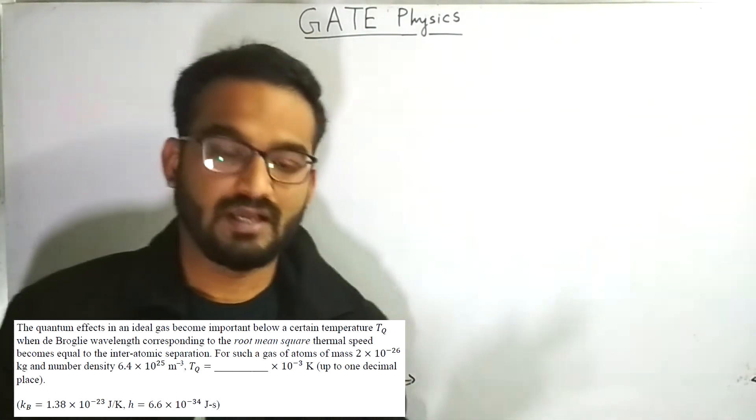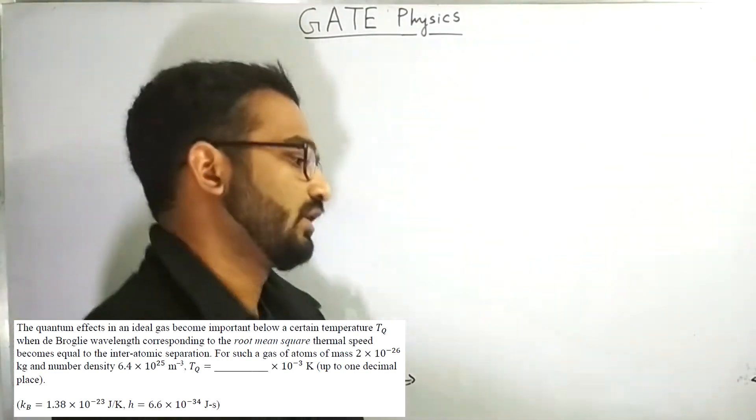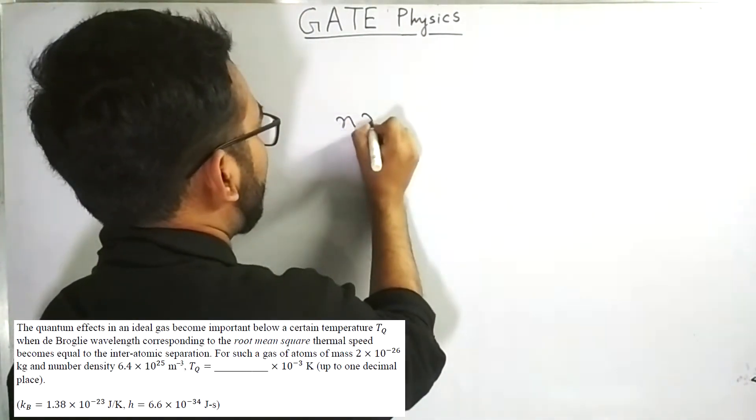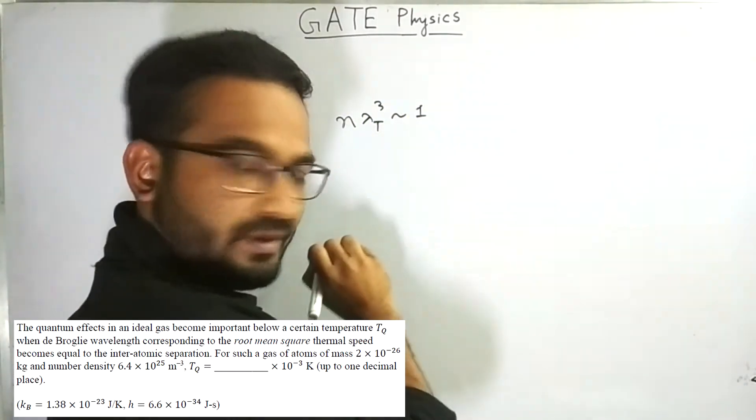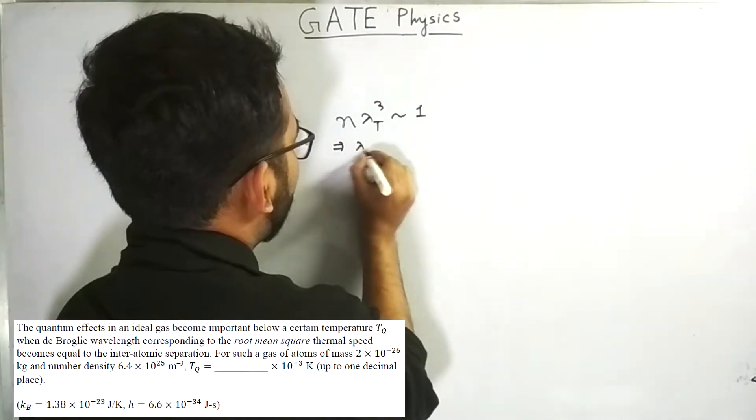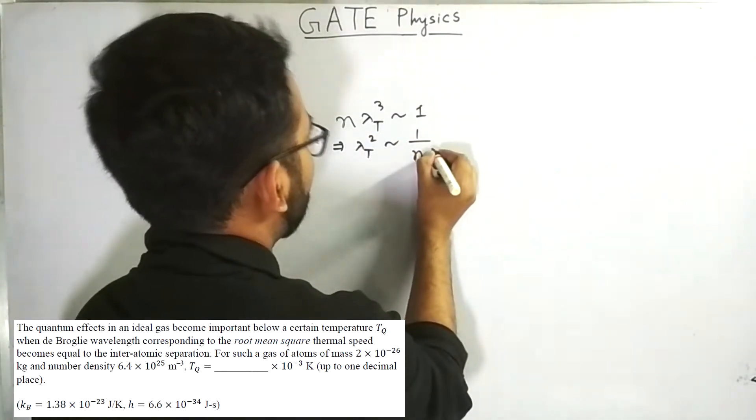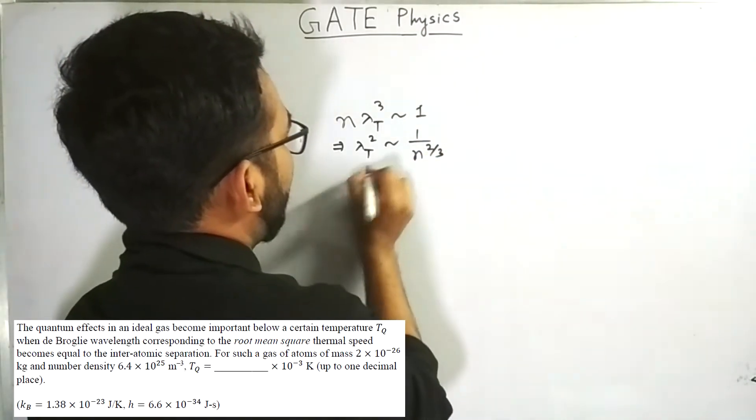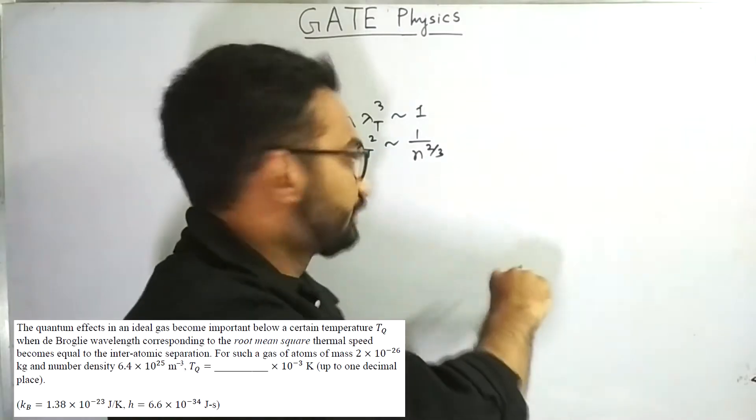Let's find out the answer. Now, using the condition of quantum effect, we know that n into lambda t cube is approximately equals to 1. Therefore, lambda t squared is approximately equals to n to the power 2 by 3. Why we have calculated this lambda t squared? It will be revealed.